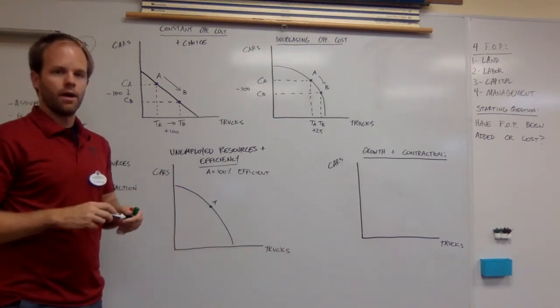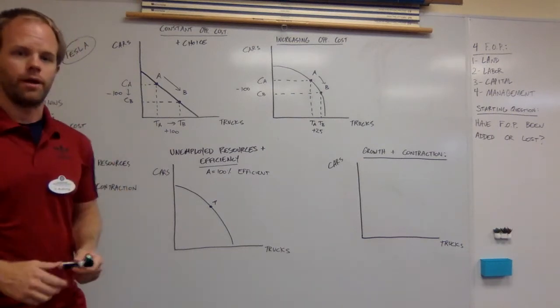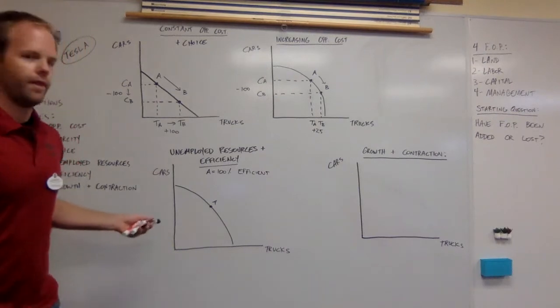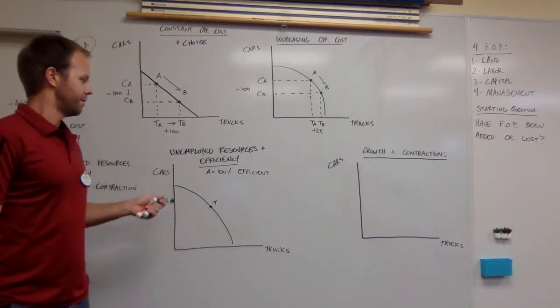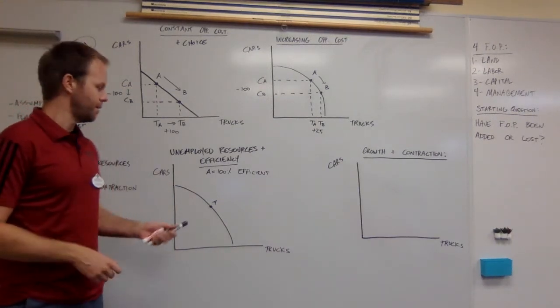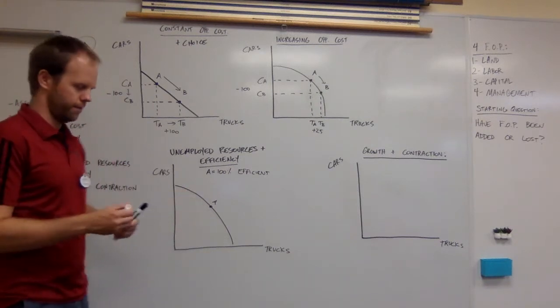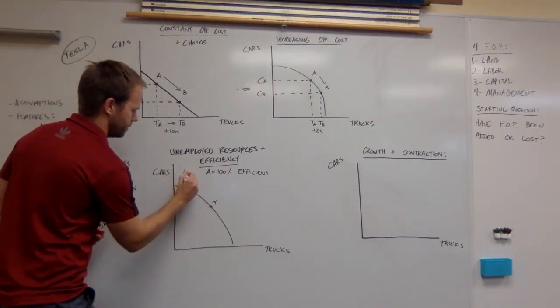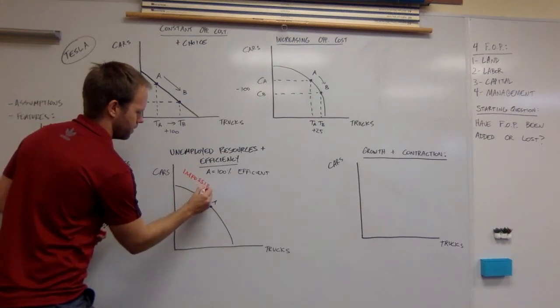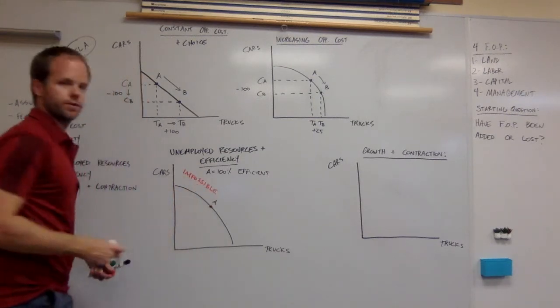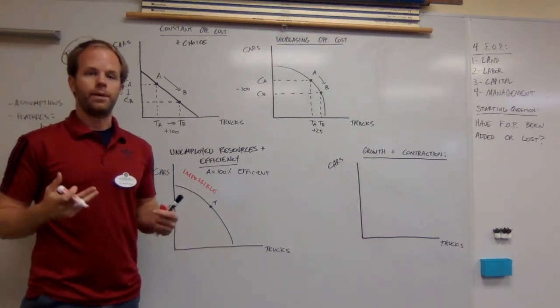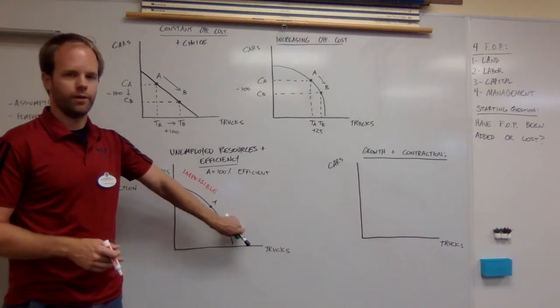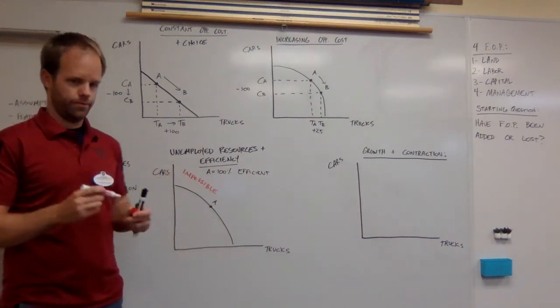If the points of production is on the line, that means they are maxing out the productivity of their four factors of production. The reason why they cannot make beyond that is because they have a limited number of factors of production. Anything that's beyond the line out here is impossible to make because they need more factors of production to produce out here.